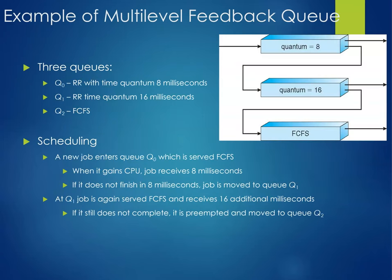Here's an example with three queues: Q0 uses round robin with a quantum of 8 milliseconds, Q1 uses round robin with 16 milliseconds, and Q2 uses first come, first serve. A new job enters Q0. When it gains the CPU, the job receives 8 milliseconds. If it does not finish in 8 milliseconds, the job is moved to Q1, where it receives 16 additional milliseconds. If it doesn't complete, it's preempted and moved to Q2.